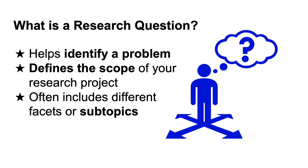A research question needs to do a few things. It needs to identify a specific problem or issue that will keep you on track. It needs to define the scope of your project and what aspects of a larger issue you plan to take on. You also want to include some facets or subtopics in your question that you plan to address in your project. These will be helpful both when you're researching and can also serve as subsections that will help you organize your paper.